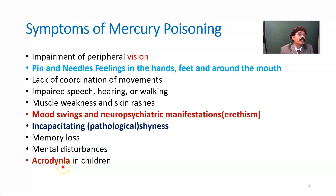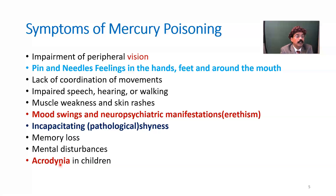Acrodynia occurs in children. At the periphery of the body — the fingers and toes — there will be redness and skin rash. In the stomach area and abdomen there will be pain. There will be red color on the cheek area and skin, and scaling of the skin. These are the features of mercury poisoning in children — we call it acrodynia.